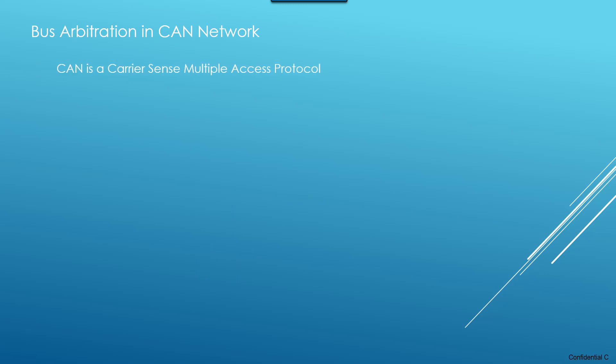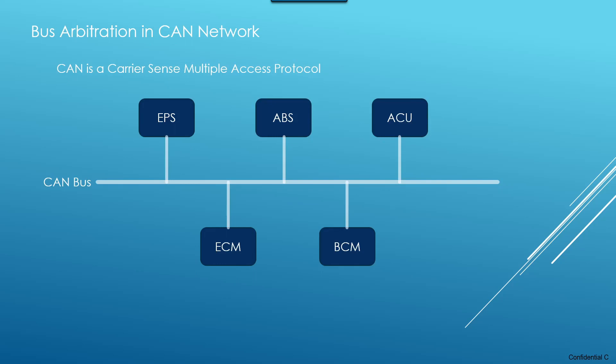CAN is a carrier sense multiple access protocol, which in simple terms means that each node observes the bus before transmitting data onto it. If it detects that there is some data on the bus already, then it does not transmit its own data and waits for some predefined time and then tries again. This prohibits corrupting an ongoing transfer on the bus. There may be a condition when two nodes start to transmit at the exact same time, and in that case the aforementioned mechanism will not be so useful.